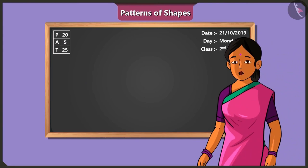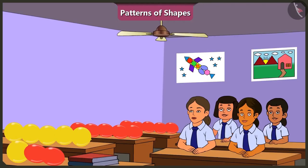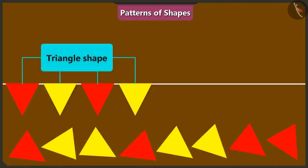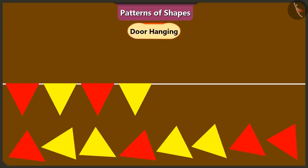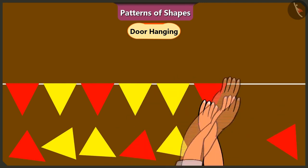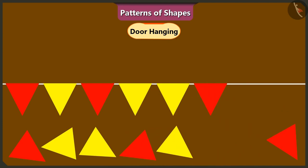Children, Diwali is approaching. The teacher shows a toran — a decorative door hanging in the shape of a triangle. Vinny and Binny complete the toran in a fairy pattern, pasting triangle shapes together. The teacher points out that the triangle shapes have been put together in a special pattern — these are patterns of shapes.